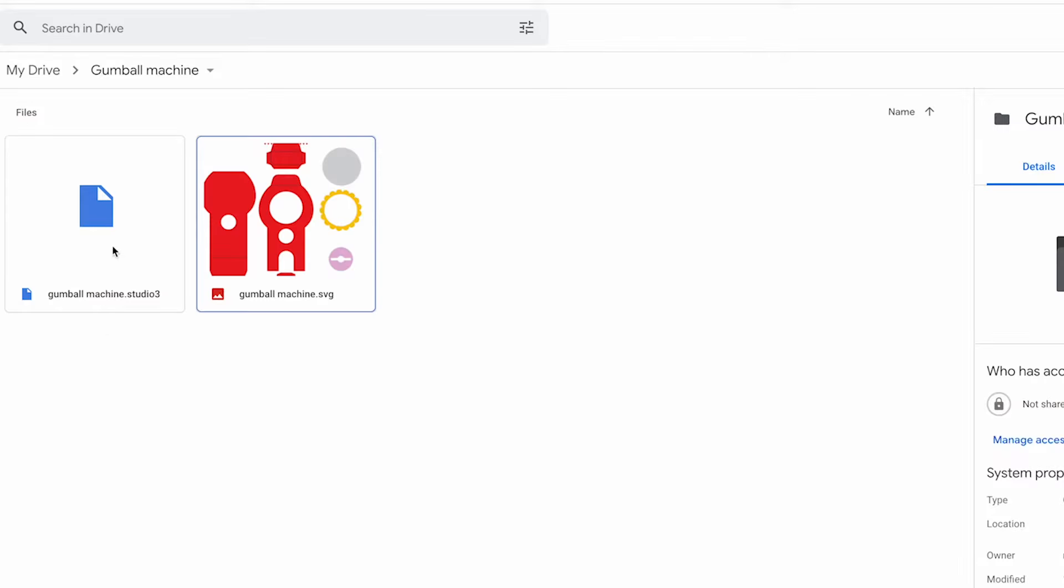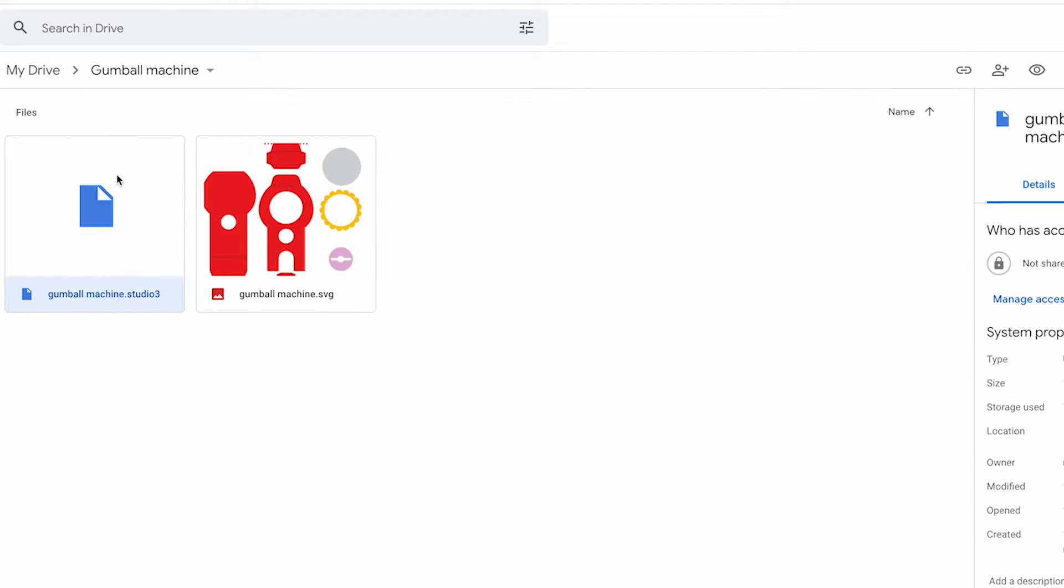The download link is in the description. One studio file for Cameo, one SVG file for Cricut.